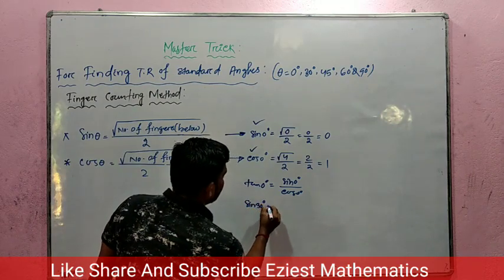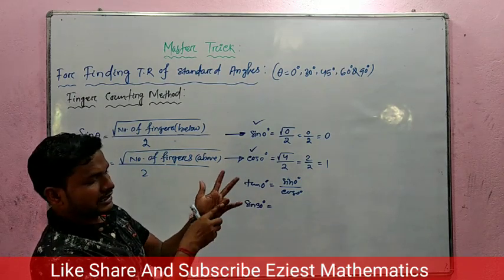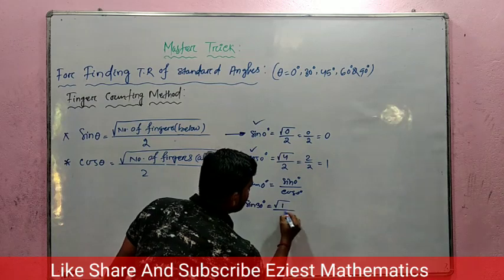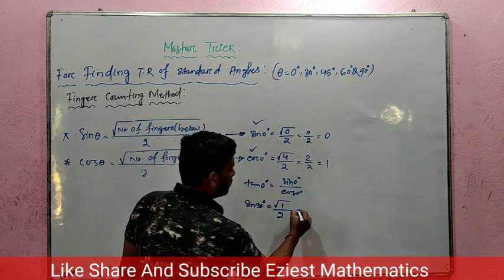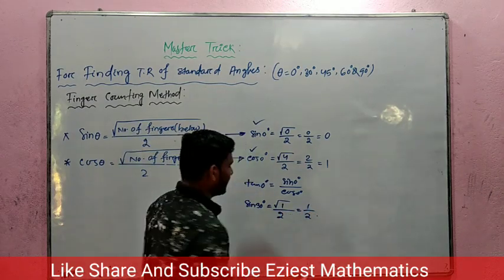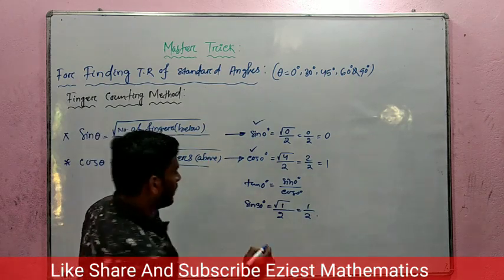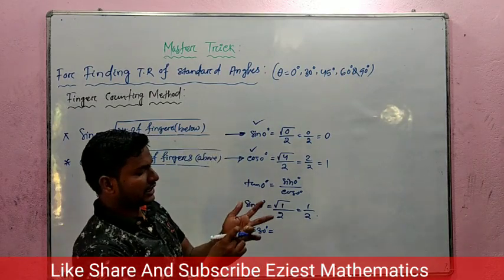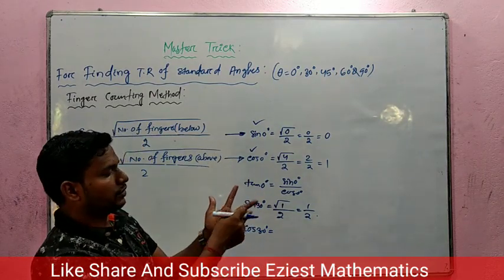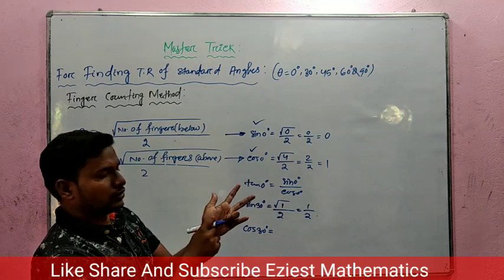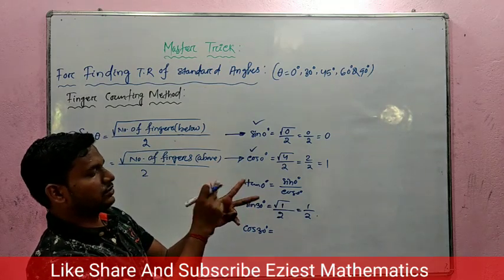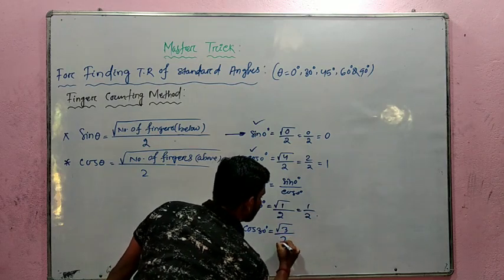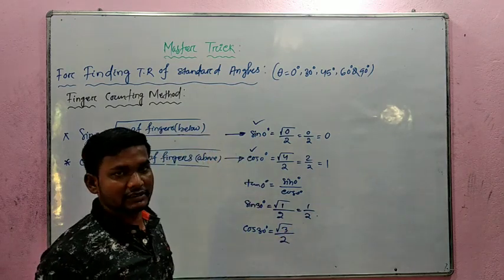Sin 30 degree: close the finger for 30 degree. The number of fingers below is 1, so sin 30 equals square root of 1 by 2, which is 1 by 2. Now for cos 30 degree: the number of fingers above the closed finger for 30 degree is 3. So cos 30 equals square root of 3 by 2, which is root 3 by 2.